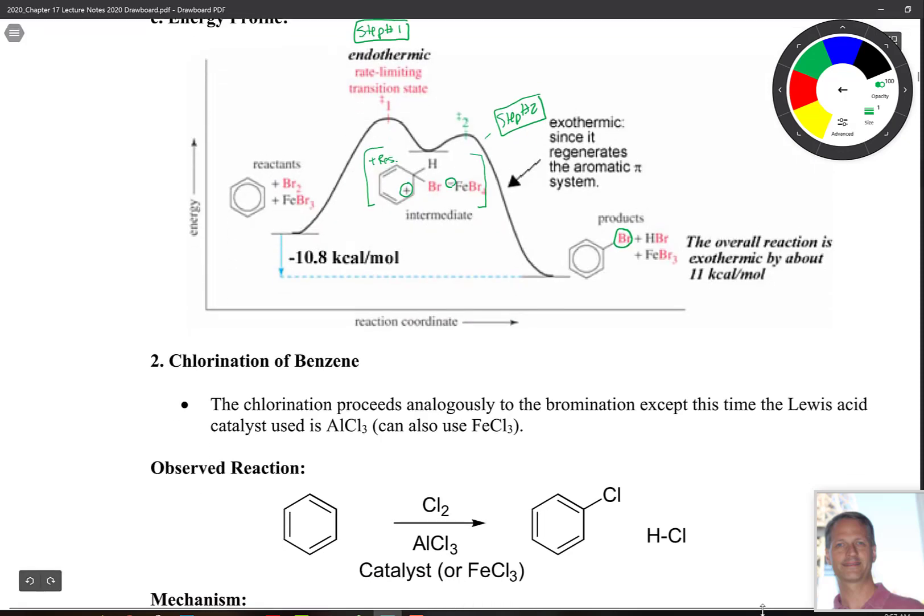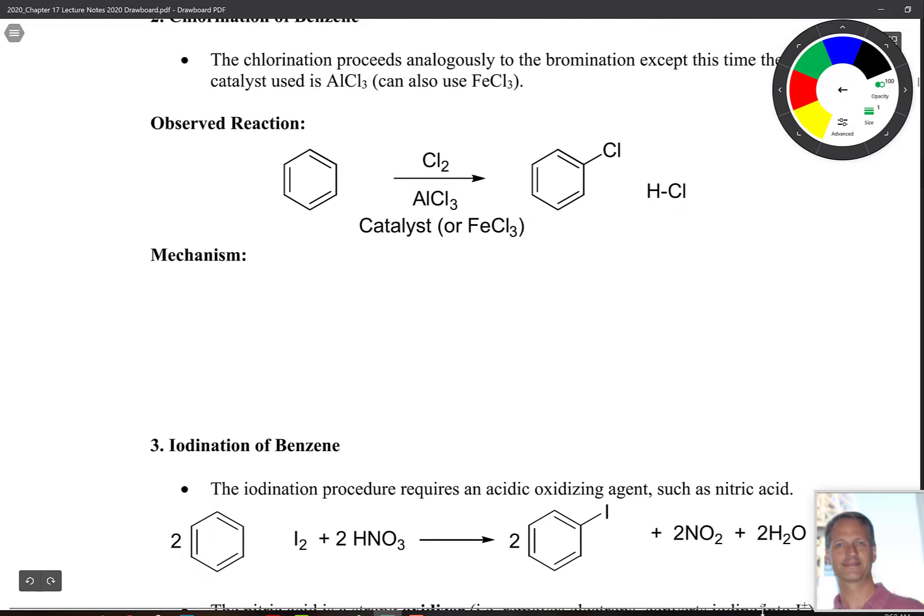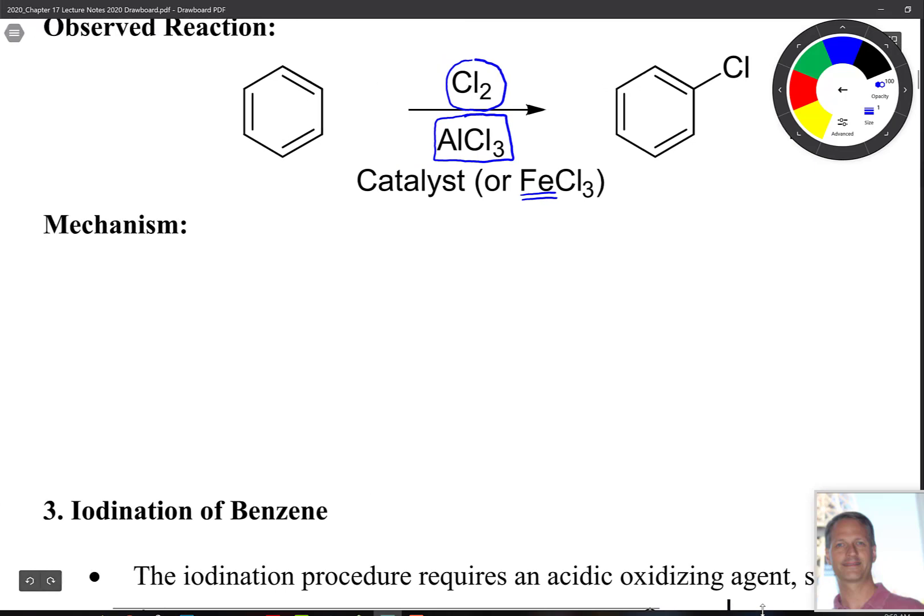If we were to look at the next reaction, which is chlorination, it turns out to be pretty much identical with the exception of two things. The first is that we're going to use chlorine here, we're chlorinating. And the second is that the catalyst here is often aluminum trichloride. Sometimes they'll pepper in a little FeCl3 in your textbook also.